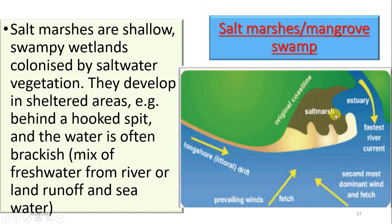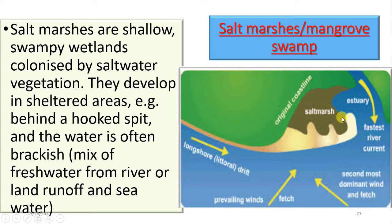The water in mangrove swamps is often brackish, because it is a mixture of fresh water coming from the mainland and salt water from the sea. Once the fresh water from the mainland mixes with water from the sea, it produces brackish water, which accumulates behind a spit to form a mangrove swamp.